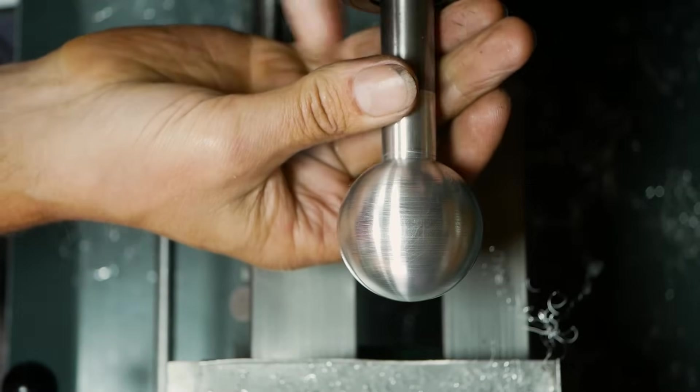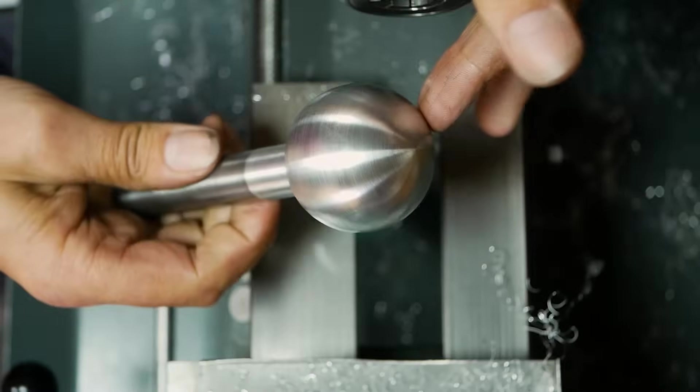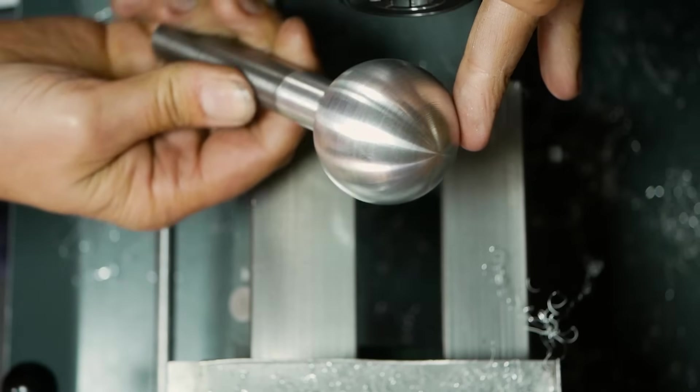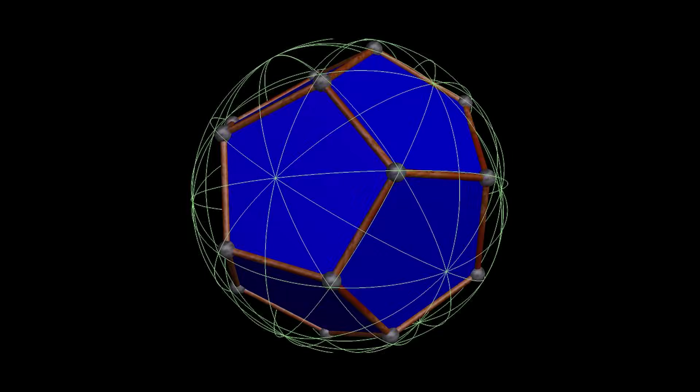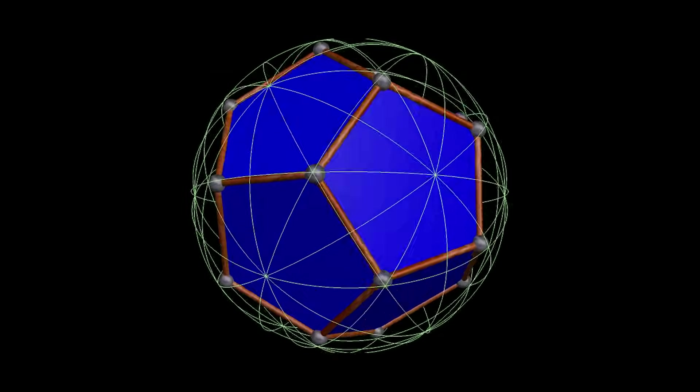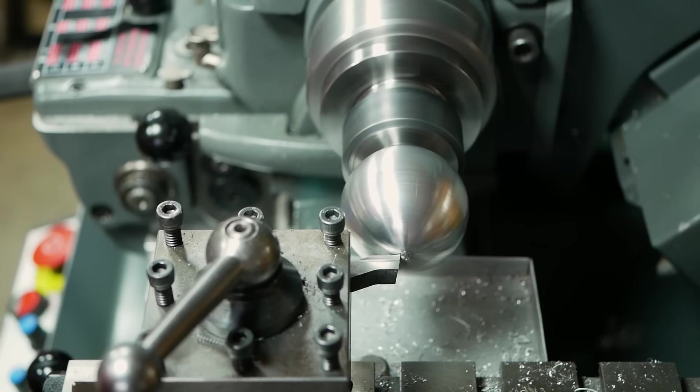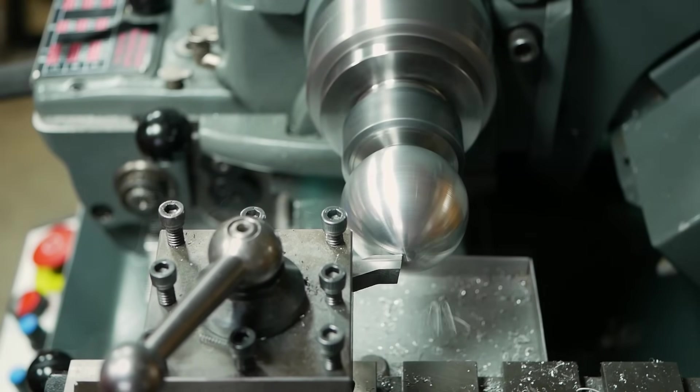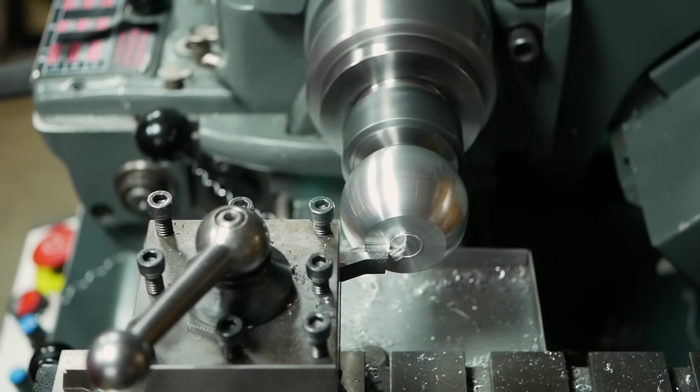From this point, it's relatively easy to machine the rest of the shape. The sphere will end up forming the circumscribed sphere of the dodecahedron, that is, the sphere that coincides with the vertices. The inscribed sphere is the sphere that is tangent to the faces of a polyhedron. Remember this, because we'll visit it later in the video.